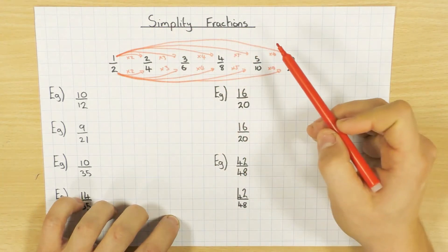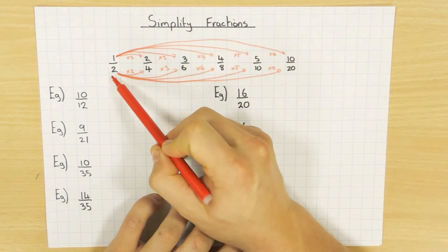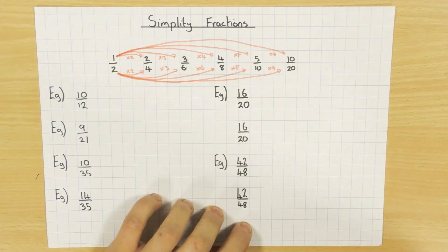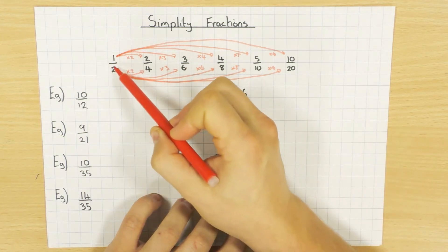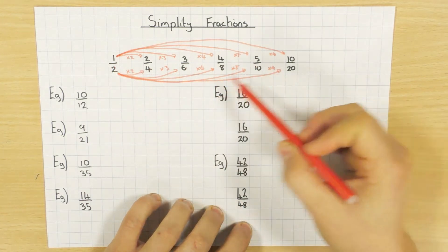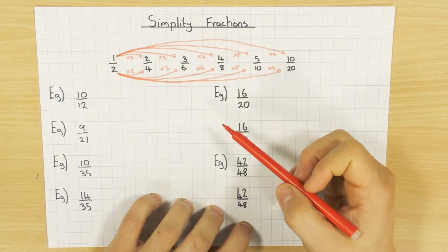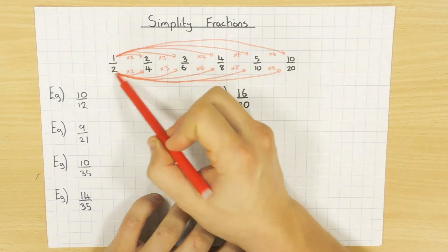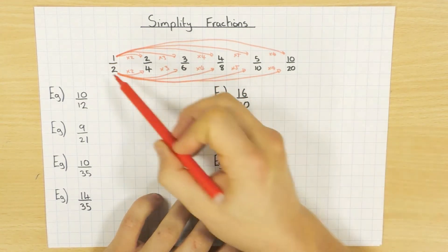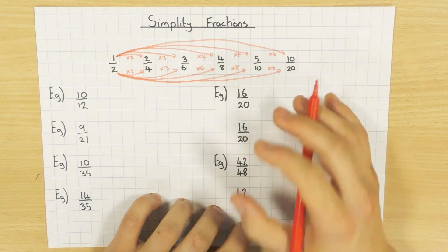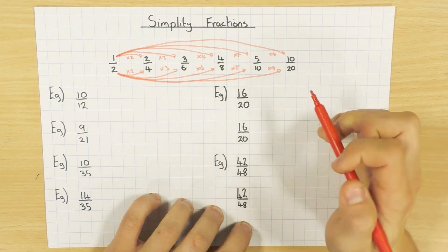When I simplify a fraction, or put a fraction in its simplest form, this is the one that I want — the smallest equivalent fraction. So all these are equivalent, all these are the same, but I want the smallest one. The numbers need to be as small as they possibly can be. So a half here would be the simplest fraction — out of all these fractions, that would be the simplest one. We're trying to achieve the smallest equivalent fraction.